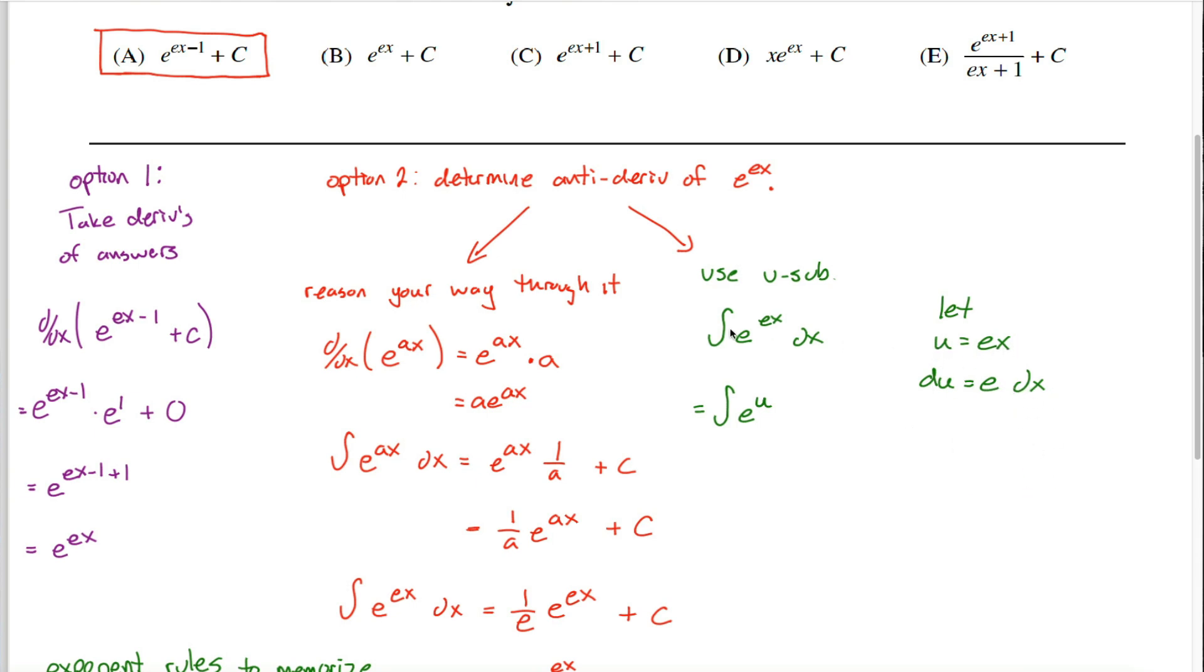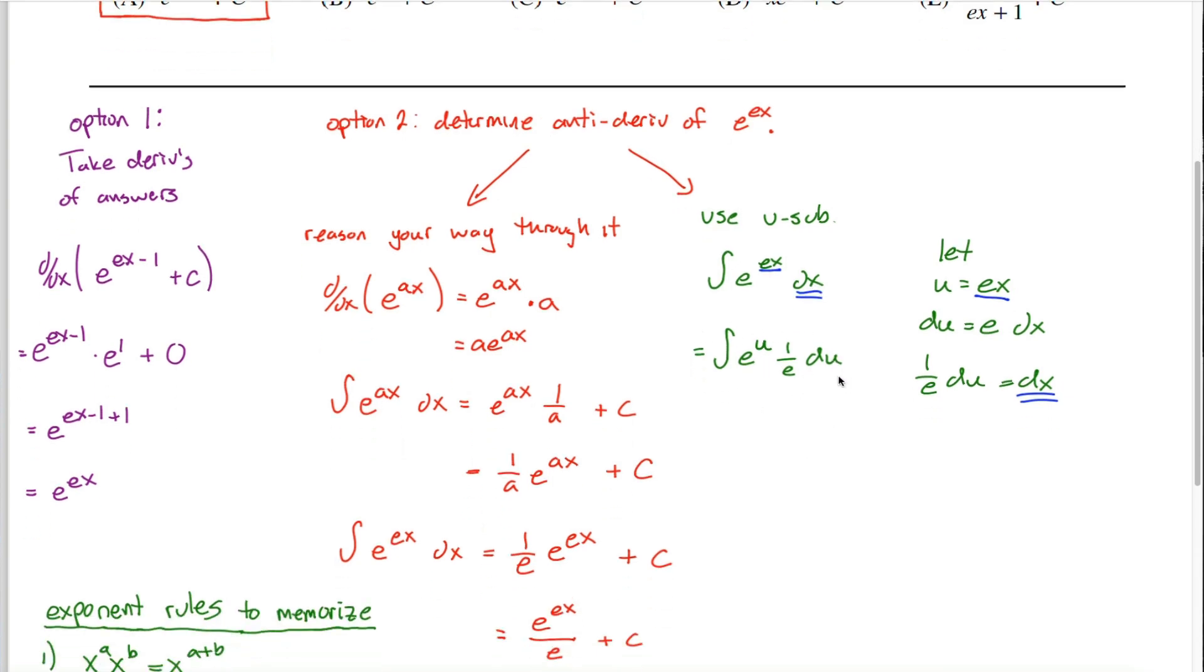The idea is to use these two substitutions to rewrite this integral. We already changed this ex into this u, but we still have this dx on the outside that we have to change into du's. Unfortunately, we don't have e times dx on the outside, so you might divide both sides of the equation by e. You get 1 over e du equals dx. Now I can substitute in this dx. I can change it to 1 over e du, and I've managed to rewrite this integral, which is in terms of x, as a new integral in terms of u.